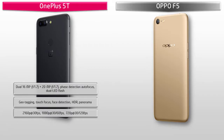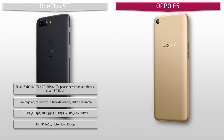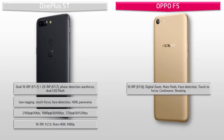The OnePlus 5T shoots video at 2160p at 30 fps, 1080p at 30 and 60 fps, and 720p at 30 and 120 fps. It also has a 16 MP Sony secondary camera with f/2.0 aperture and 1080p video recording with Auto HDR. The Oppo F5's primary camera is 16 MP with f/1.6 aperture, digital zoom, auto flash, face detection, and touch-to-focus.